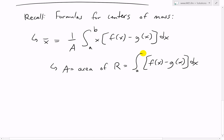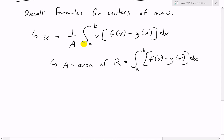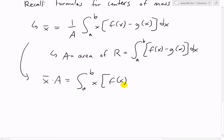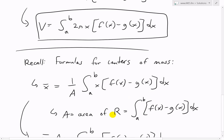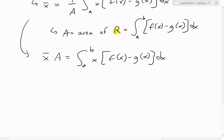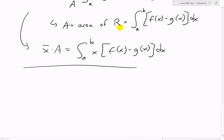Rearranging the center of mass formula and solving for the integral of x times [f(x) minus g(x)] dx, we get that x-bar times A equals the integral from a to b of x times [f(x) minus g(x)] dx. We can substitute this back into our volume formula.